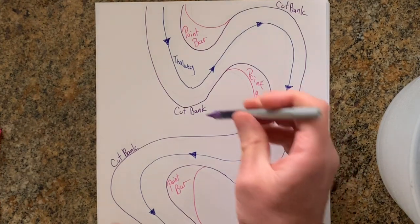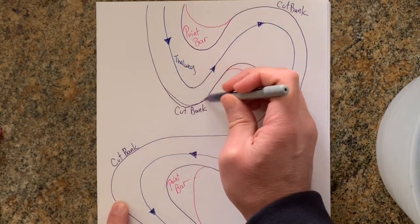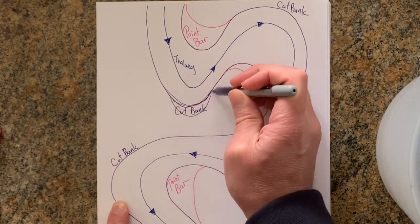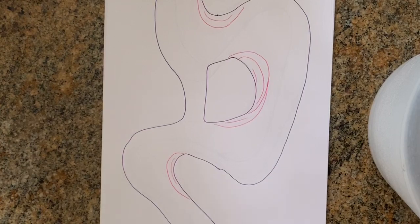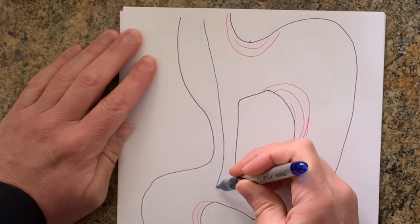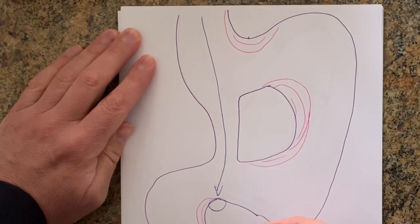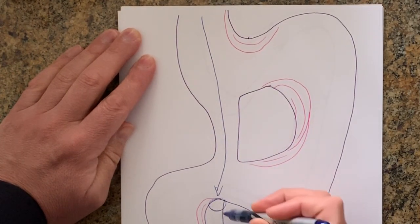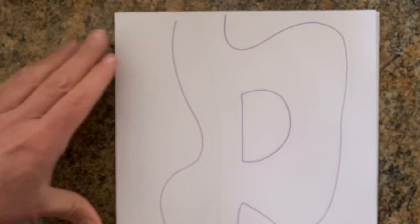You might ask what's going to happen when the cut bank continues to get eaten away. The thalweg is going to eat through that section and begin to smash into the next part of the meander, eventually eroding the point bar that was just created. You end up with a narrow channel at that point.